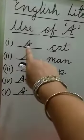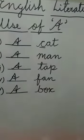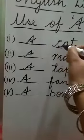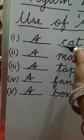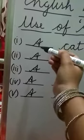First one, A cat, C-A-T, cat. Over here, C is what children? C is not a vowel. C is a consonant. So we have used here A.